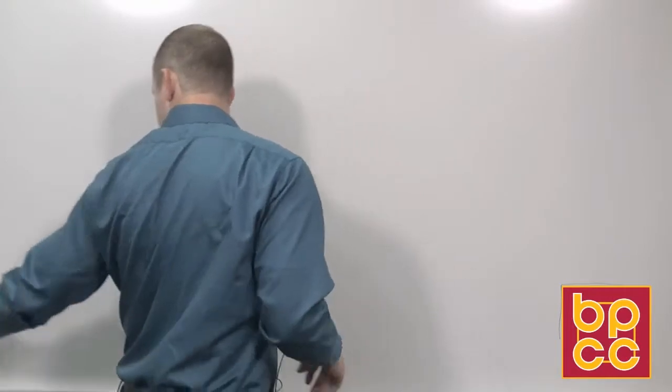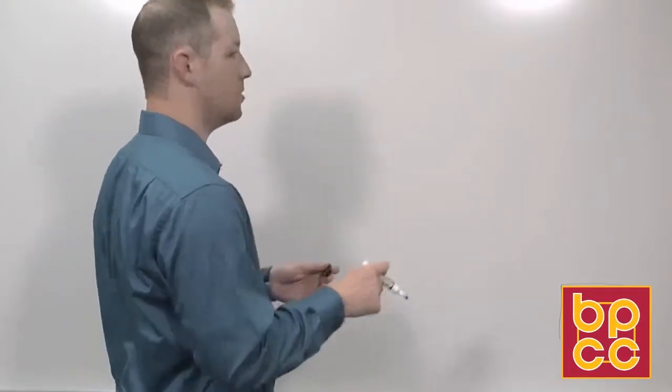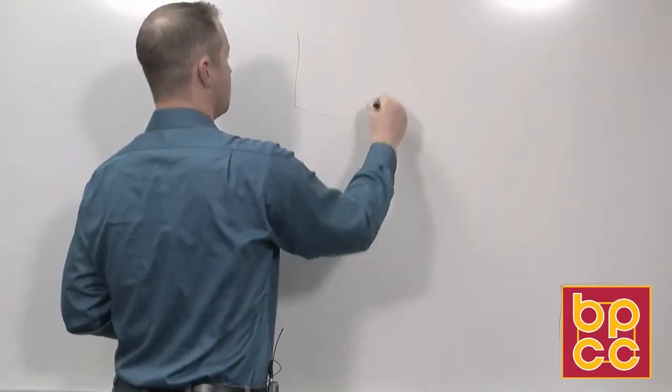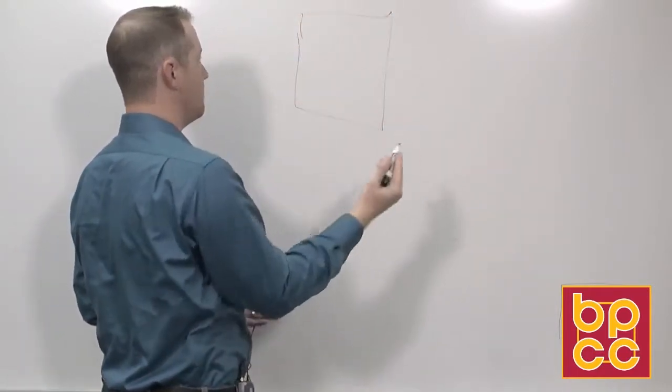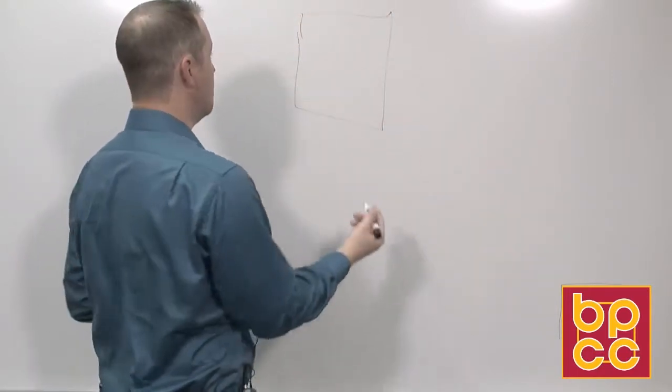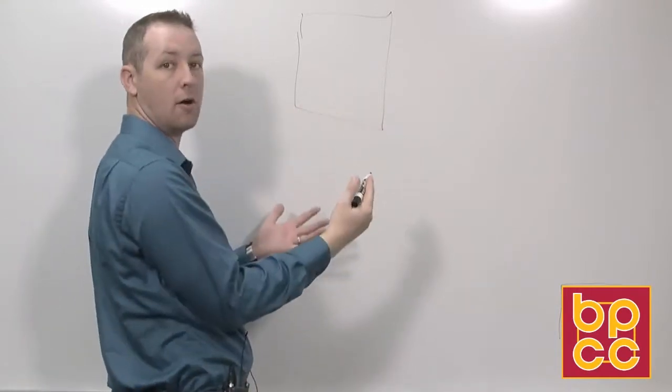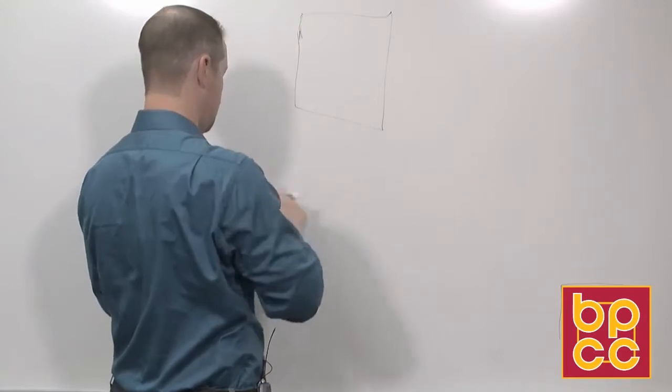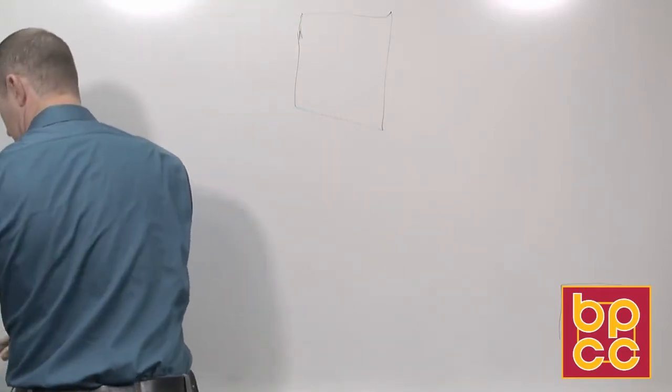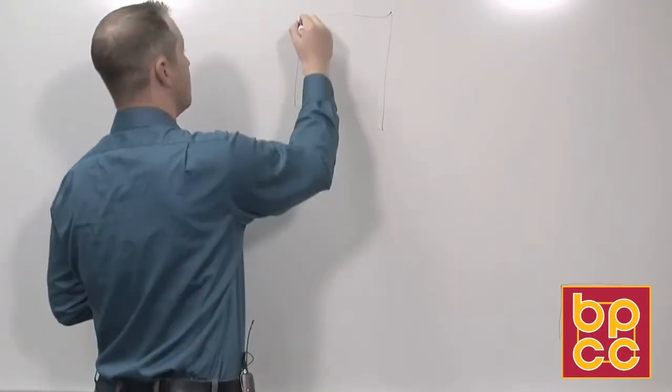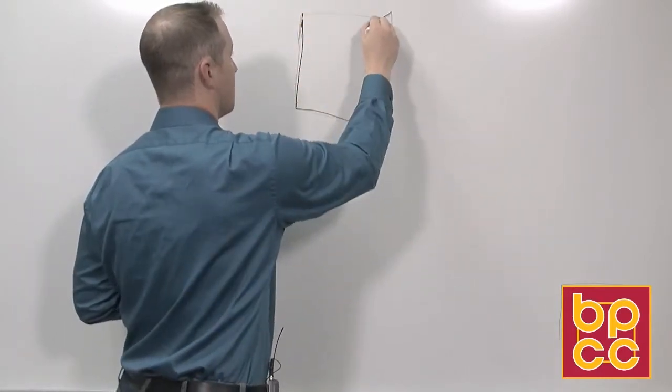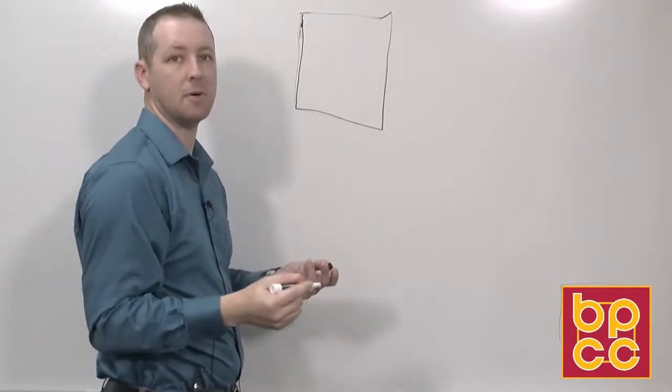So basically what you would do for your storyboarding is you would just draw out, if you have your first page, you draw out what you want on the page. Let me see if I have a better marker. That's a little light. Oh yeah, there we go. So we draw out our first page.